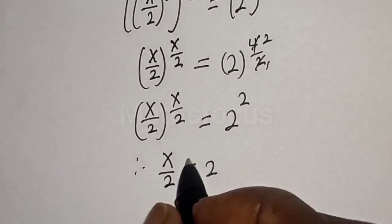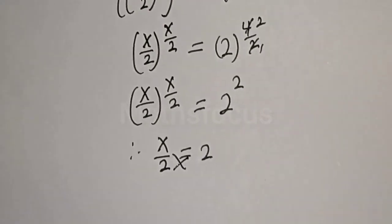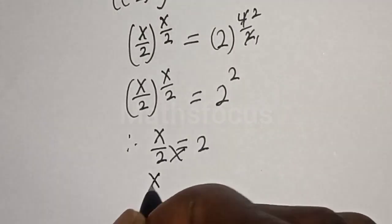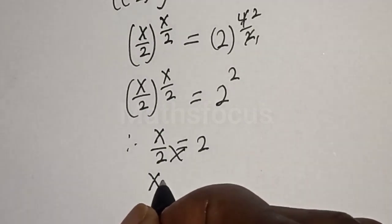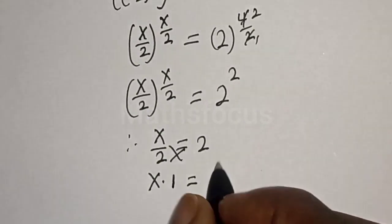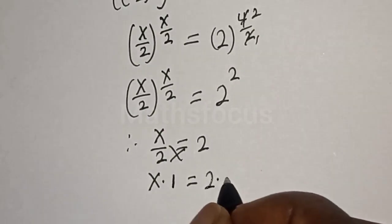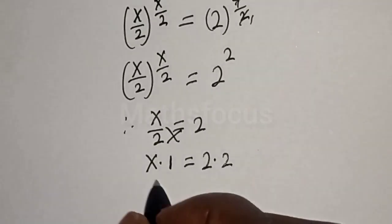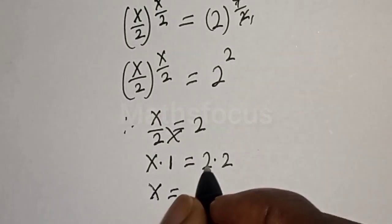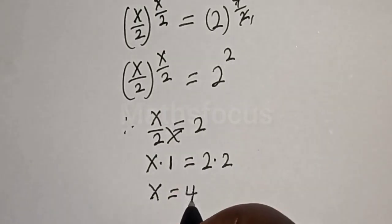Let's cross multiply. We have S multiplied by 1 equals 2 multiplied by 2. Then S equals 2 multiplied by 2, that is 4.